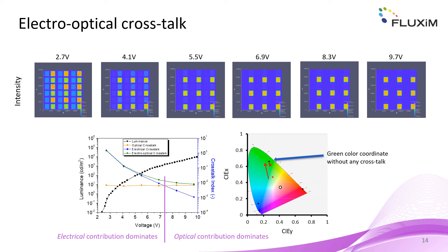In the simulation, we can easily distinguish between electrical and optical contributions. This analysis is shown on the bottom left. The overall crosstalk, shown in green, is composed of electrical and optical contributions. The optical contribution does not depend on the applied voltage, and as the electrical crosstalk decreases with voltage, there is a crossing point at around 7.4 volts where the optical leakage dominates the overall crosstalk.